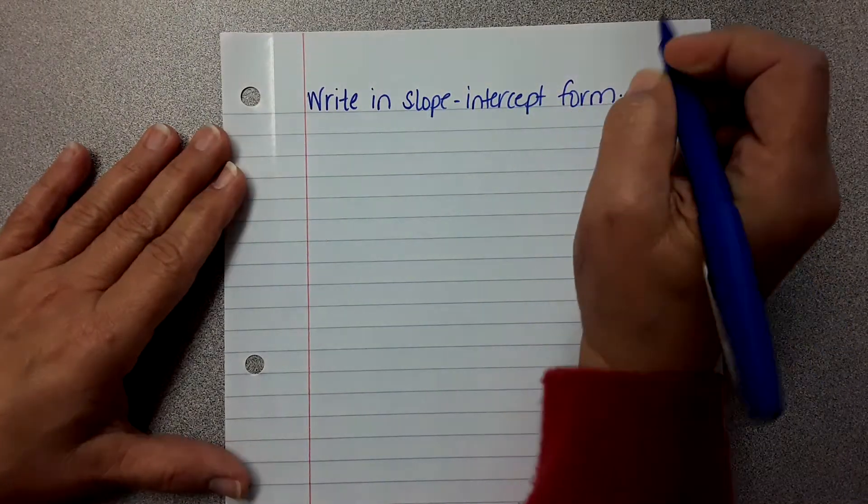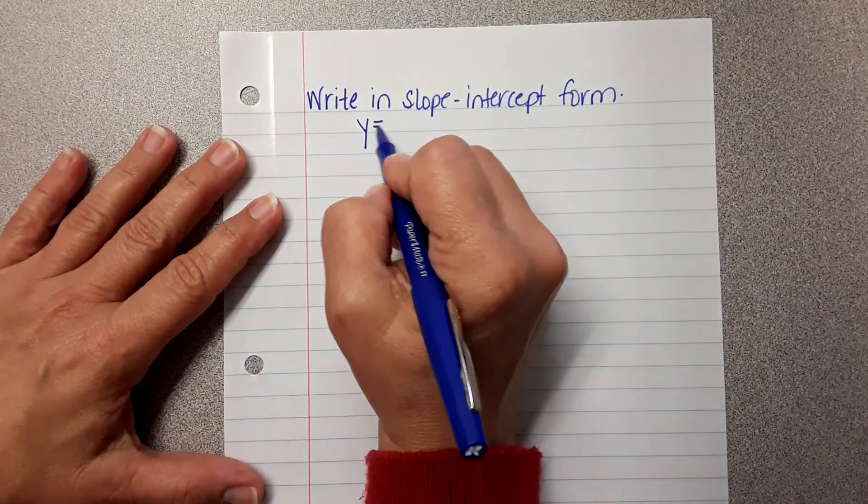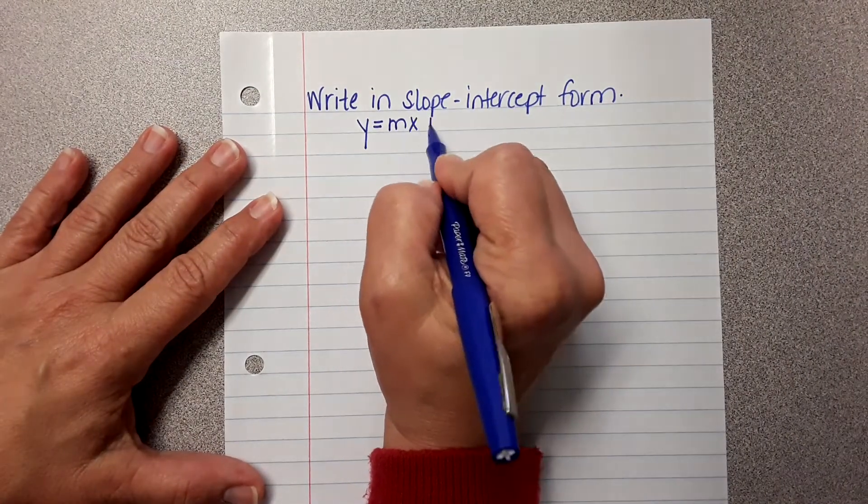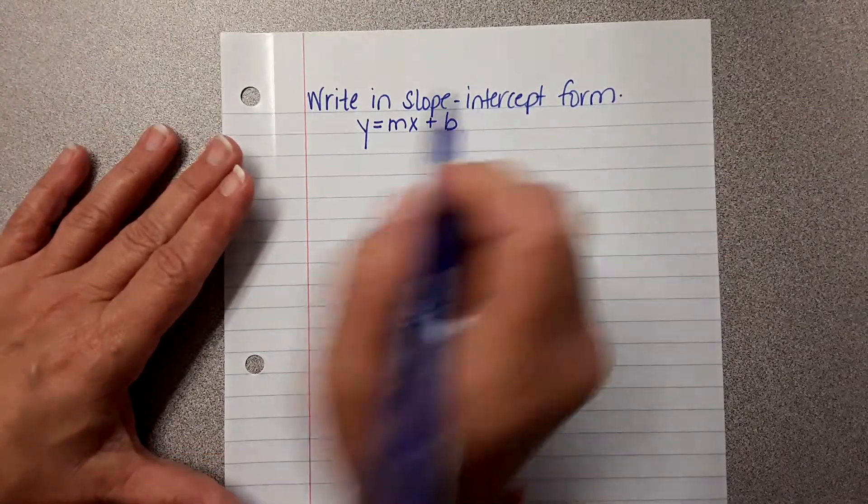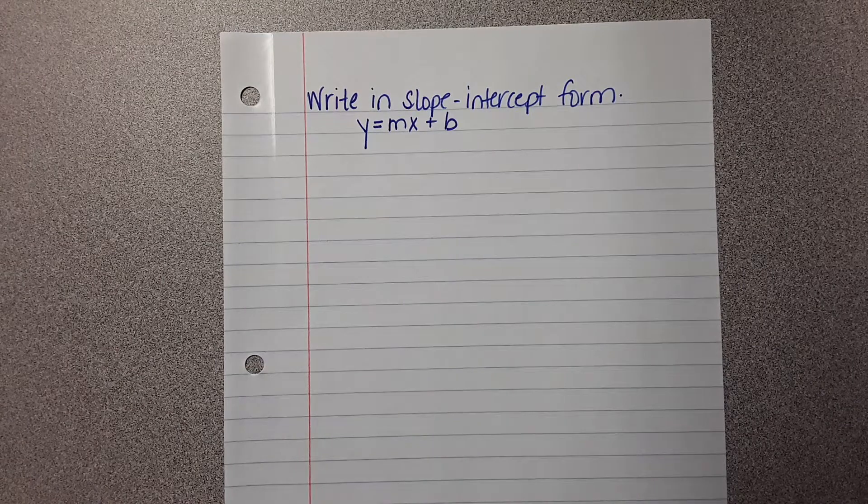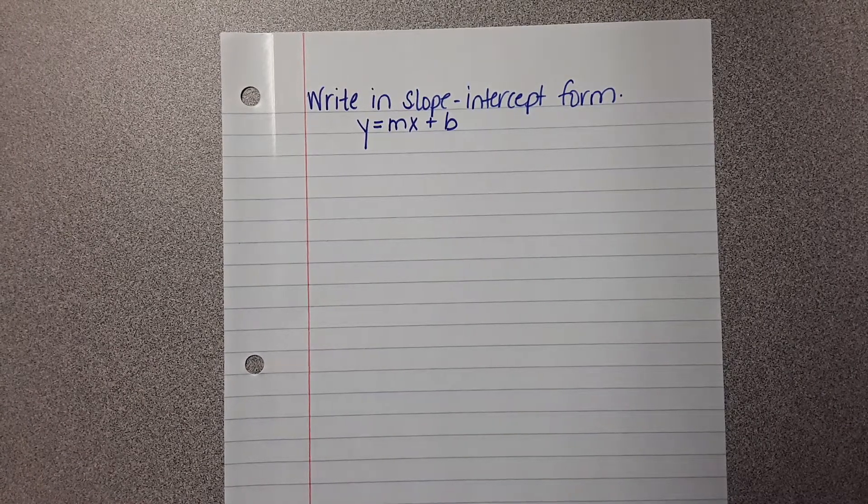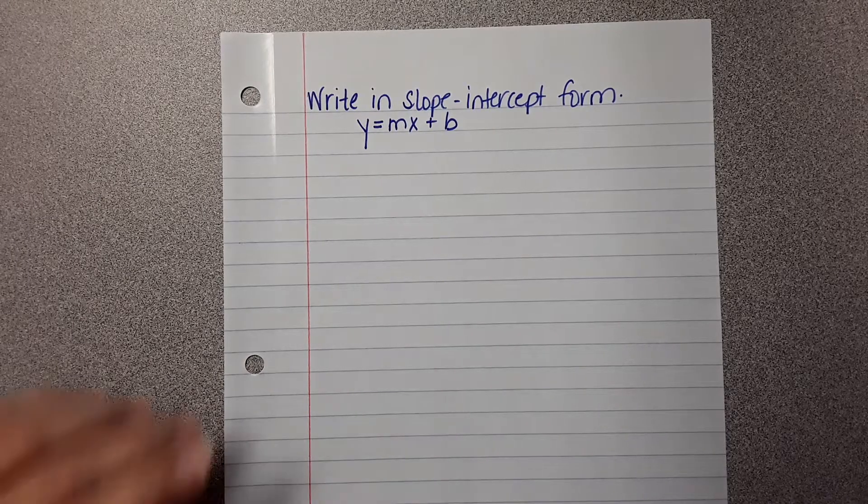Okay, so what is slope intercept form? Y equals MX plus B. So what we're going to do is I'm going to give you an equation and it's going to look like it was in point slope form, because it is in point slope form, and we're going to rewrite it in slope intercept form.